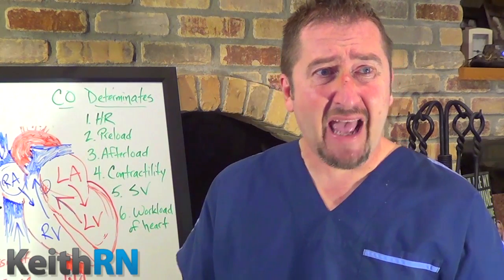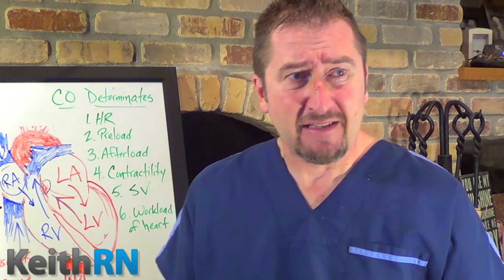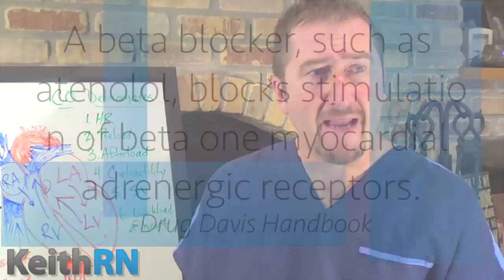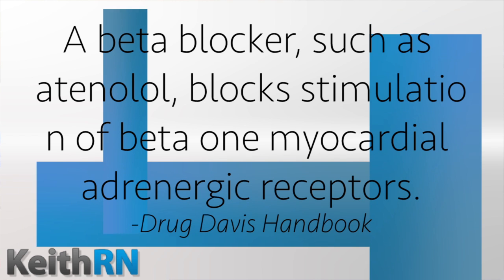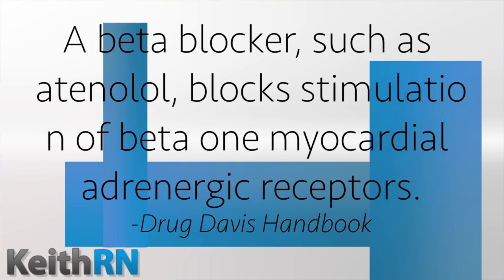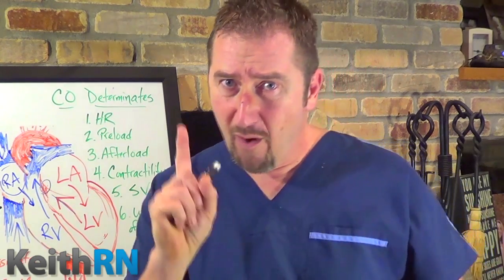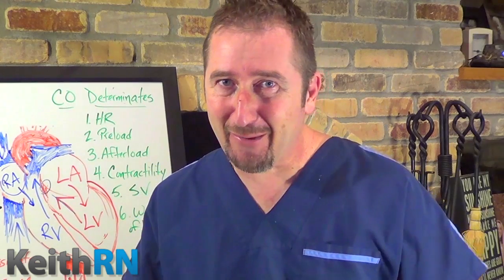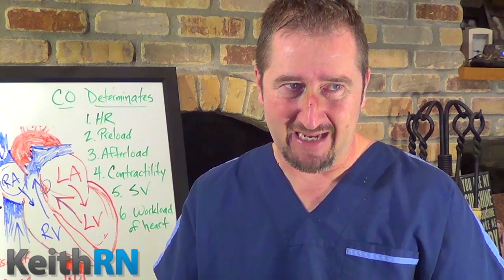Let's look at Davis Drug, one of my favorite nursing drug handbooks. This is how it describes the mechanism of action. A beta blocker such as atenolol blocks stimulation of beta-1 myocardial adrenergic receptors and does not usually affect beta-2. As you know, we have one heart and two lungs — that's how you remember beta-1 versus beta-2. It does not typically affect beta-2 receptor sites.